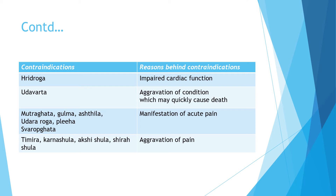In mutra ghat, gulm, ashthila, udara roga, pliha and swarogh, there can be manifestation of acute pain as well as increase in shlesma or udagdat. In timir, karnashul, akshishul and shirashul, there can be aggravation of pain.